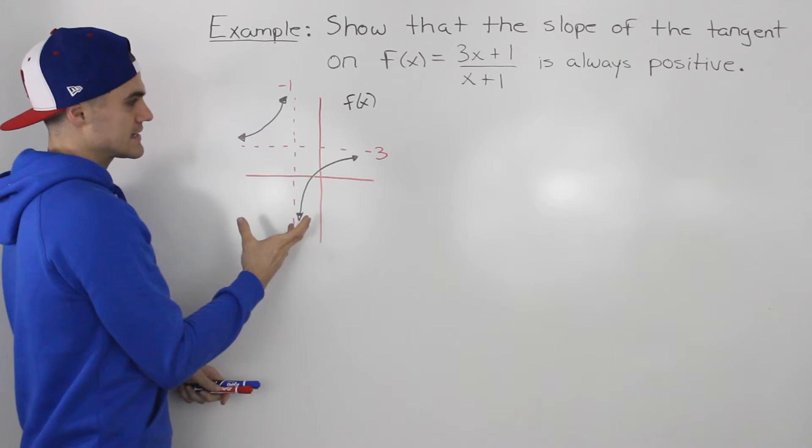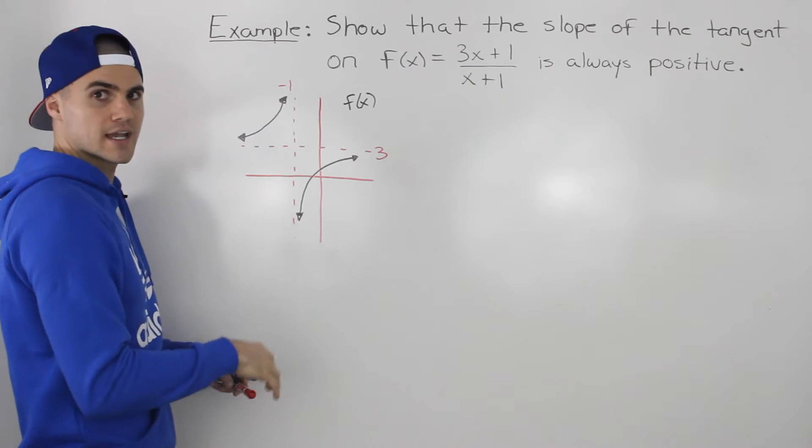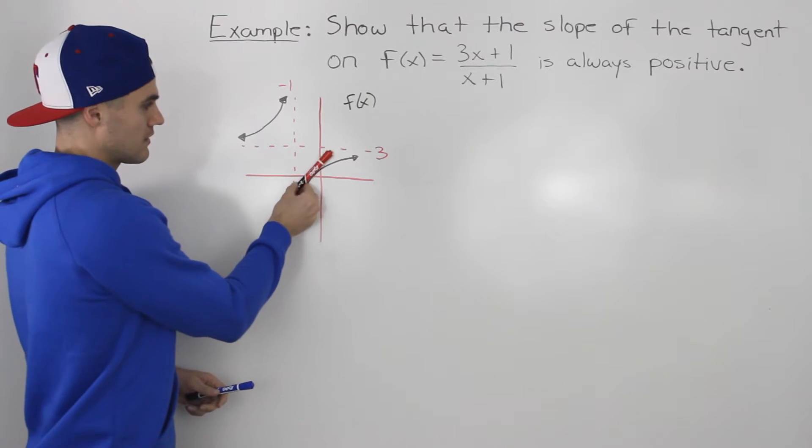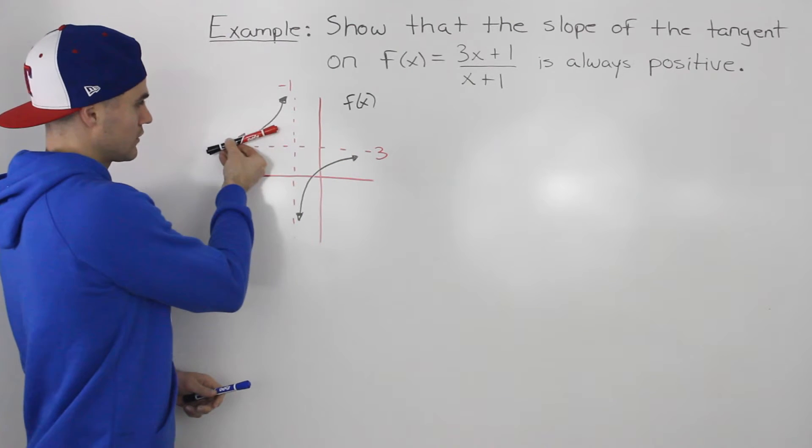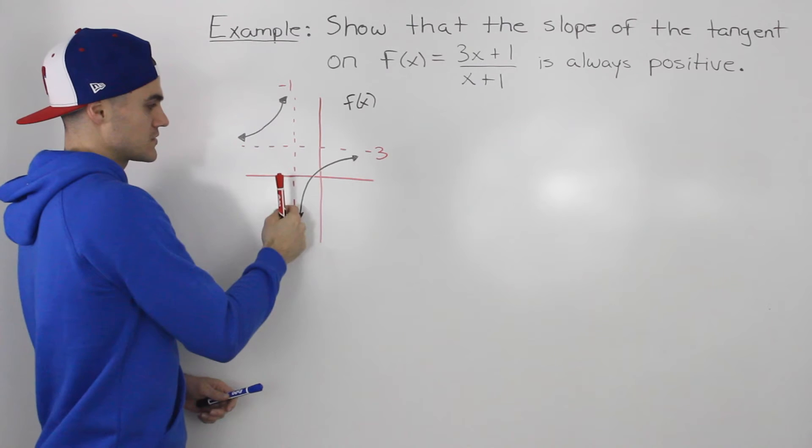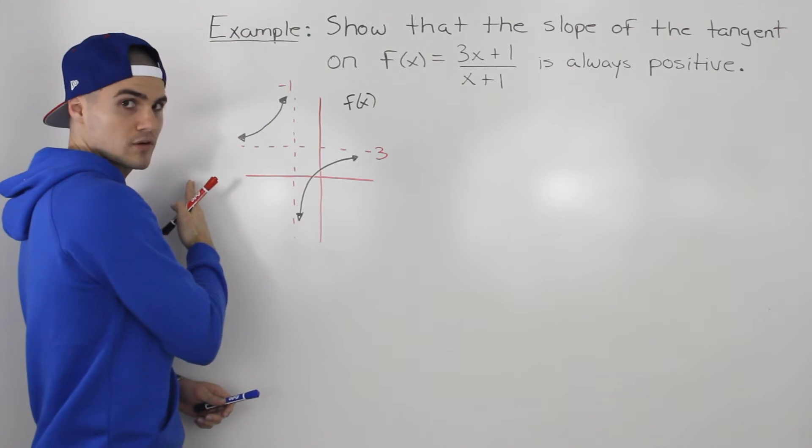And it's easy to tell from the diagram that the slope of the tangent is always going to be positive. No matter where we draw that tangent on these curves, it's always going to be increasing; the y values are always going to be increasing when we read from left to right.